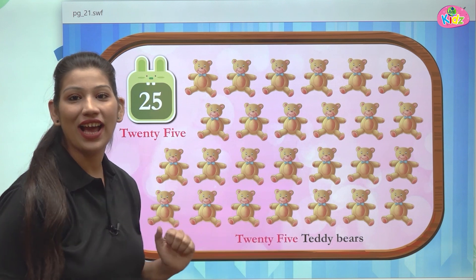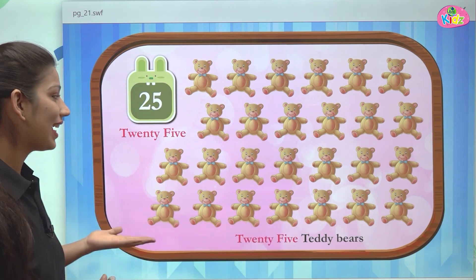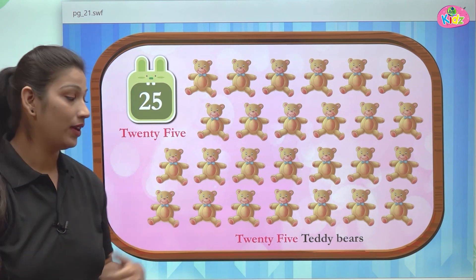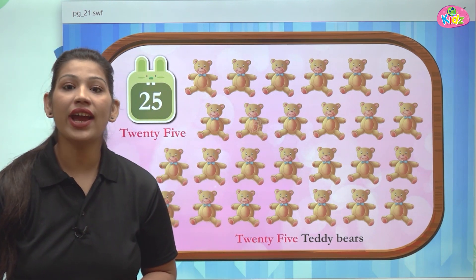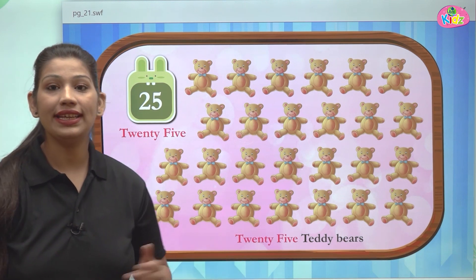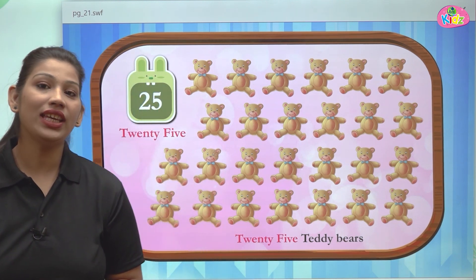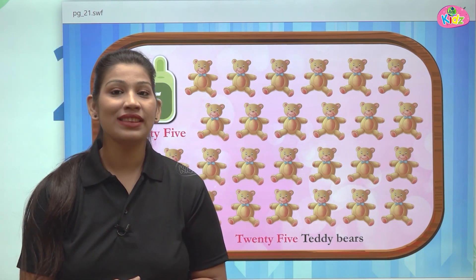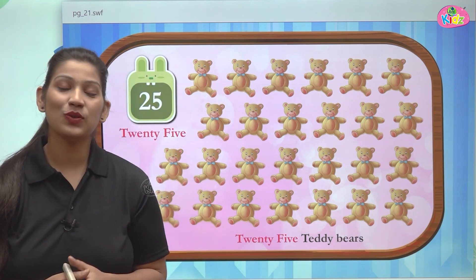And 25 — in total we have 25 teddy bears. 25 is written as 2 and 5: first write 20, then write 5. That's all, students, for today's concept of numbers from 21 to 25. Bye-bye!